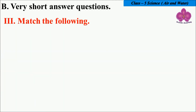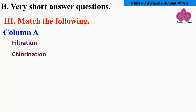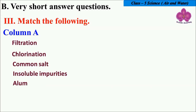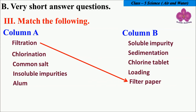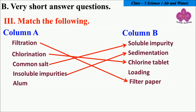Next, match the following. In Column A we have: Filtration, Chlorination, Common Salt, Insoluble Impurities, and Alum. In Column B: Soluble Impurity, Sedimentation, Chlorine Tablet, Loading, and Filter Paper. The answers are: Filtration — Filter Paper, Chlorination — Chlorine Tablet, Common Salt — Soluble Impurity, Insoluble Impurities — Sedimentation, and Alum — Loading.